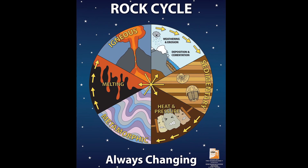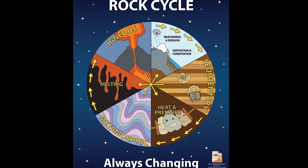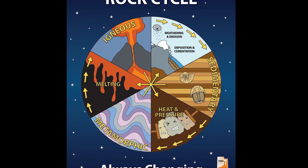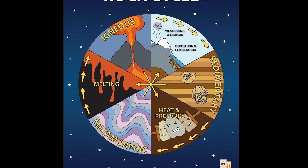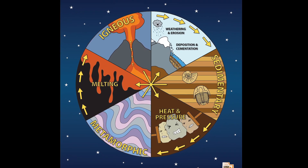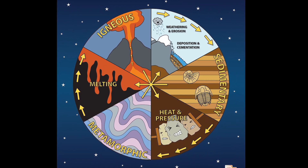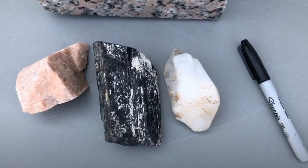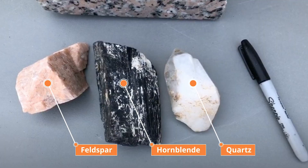Notice how these processes are cyclical and any rock type can be made from any other rock type. So to make a rock — in this case an igneous rock — we combine minerals.